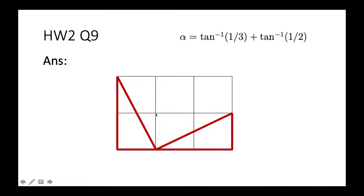We draw two congruent right-angled triangles — each with sides one and two — placed at different orientations. Notice that one side of the first triangle equals one side of the second, and a particular angle between them is a right angle. This is because the two small angles plus this angle sum to 180 degrees, and the small angles together with a right angle also sum to 180 degrees, confirming this is a right angle.